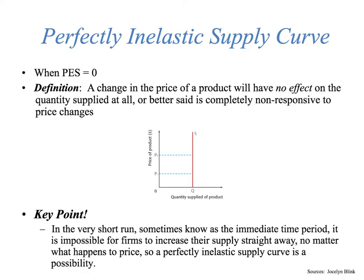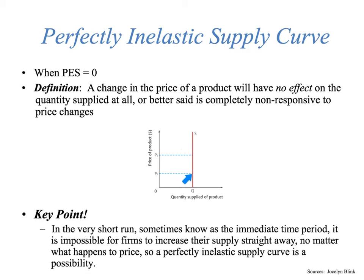Perfectly inelastic supply is when PES equals zero. The definition: a change in the price of a product will have absolutely no effect on the quantity supplied — it is completely non-responsive to price changes. This is represented by a supply curve that's perfectly vertical at a particular quantity. It doesn't matter if the price is one, two, three, four, or five — no matter what, the supplier cannot change the supply; they cannot cut or increase supply in response to a price change.